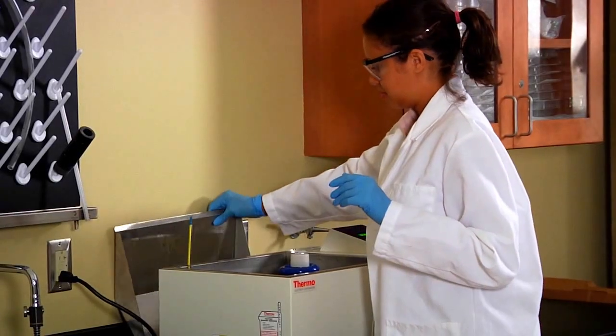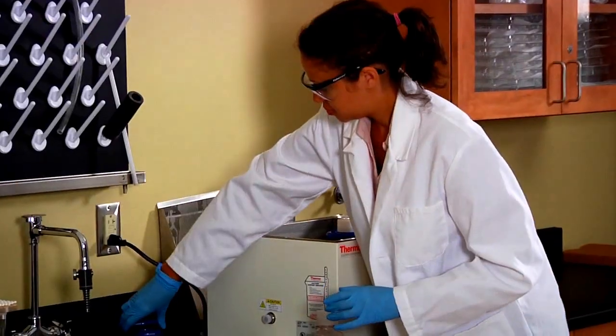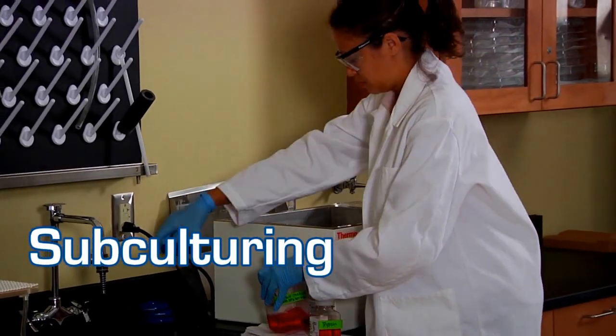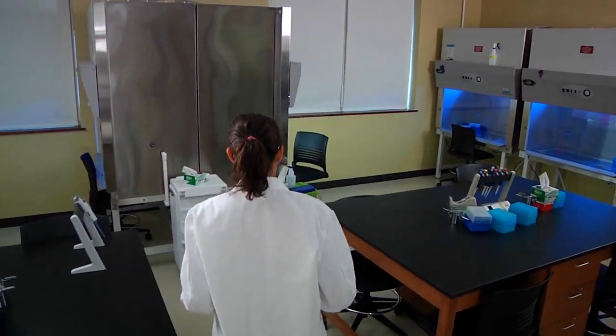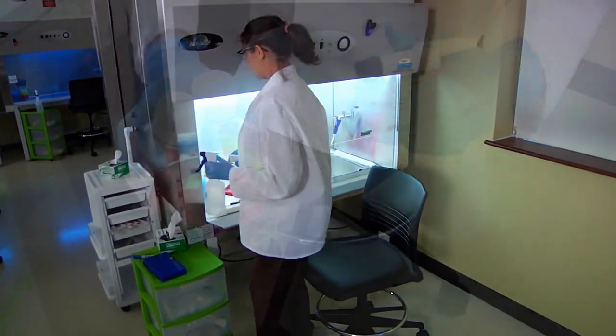As cultured cells grow and divide, they use up nutrients and eventually cells will multiply to a point that they run out of space in the cultured vessel. Subculturing is the process of diluting and transferring the cells into more vessels with fresh culture medium so we can produce a new culture and the cells can continue growing.